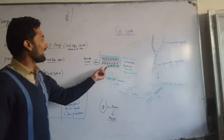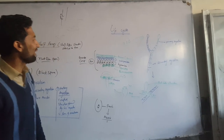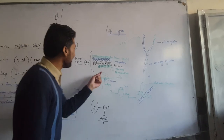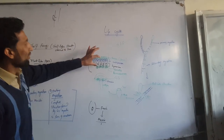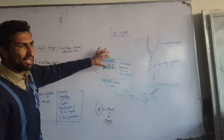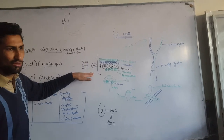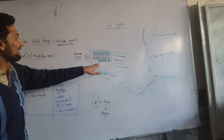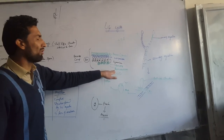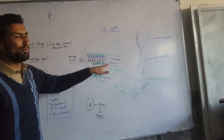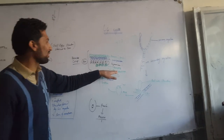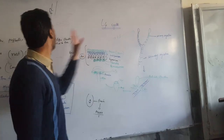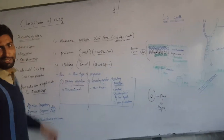In the hymenium layer, karyogamy takes place, in which both nuclei fuse with each other to form a diploid nucleus. This diploid nucleus undergoes meiosis, and from this the basidiospores are formed. This is all about the life cycle of the Basidiomycota.